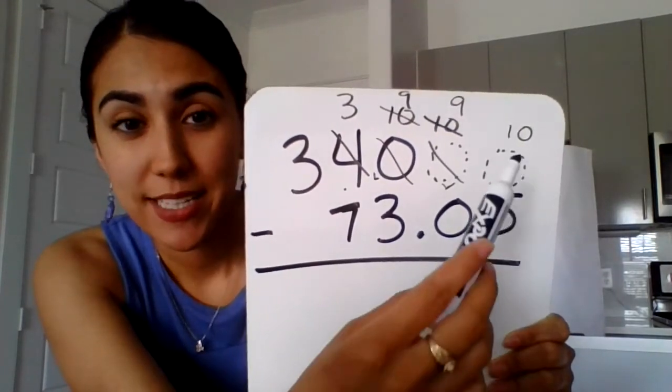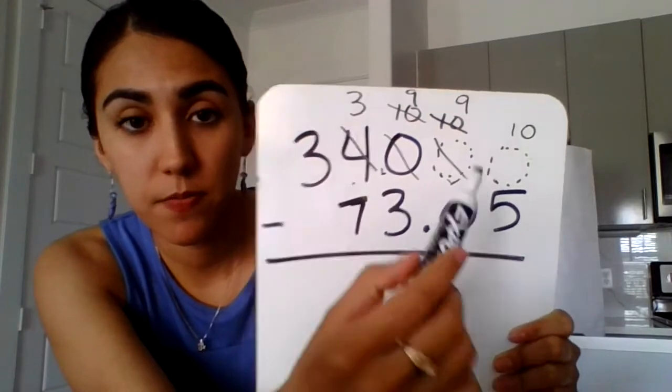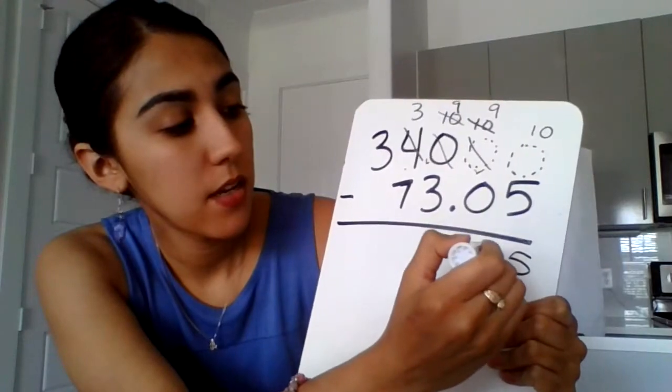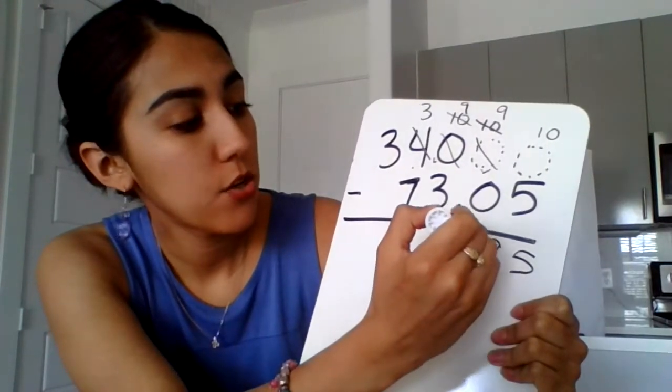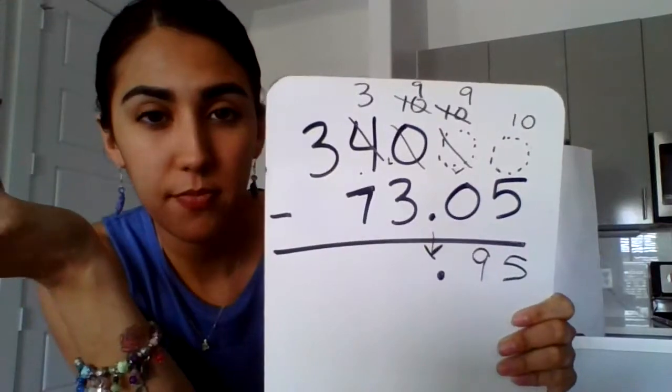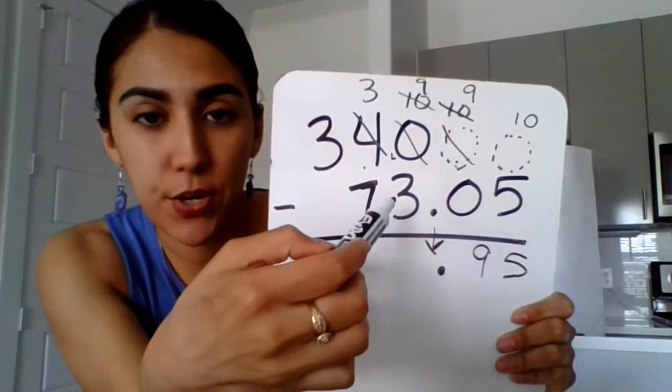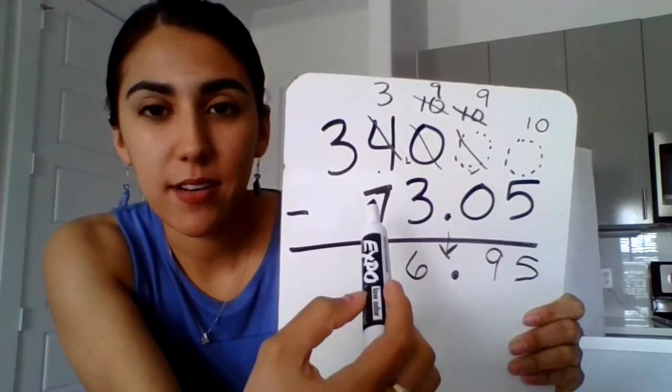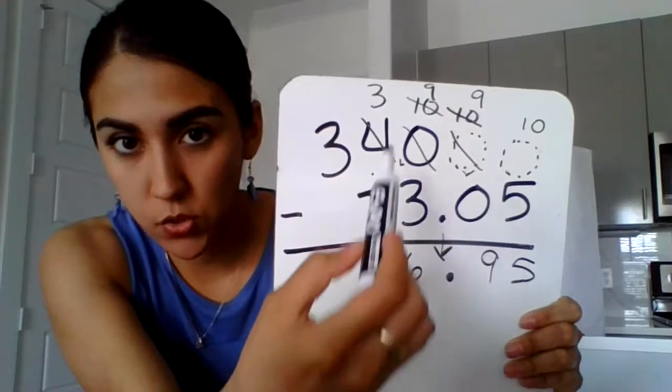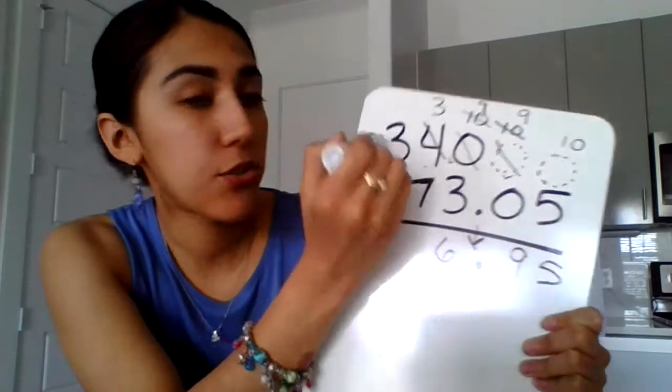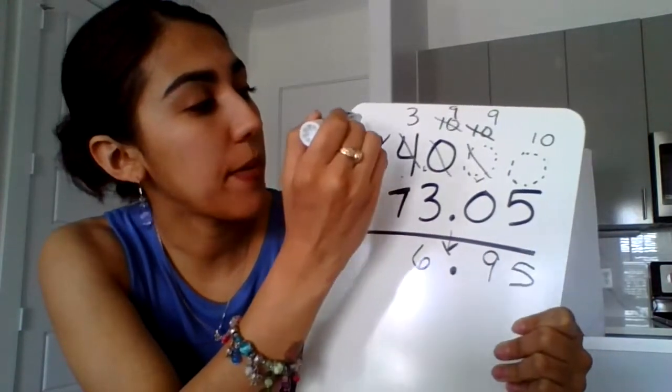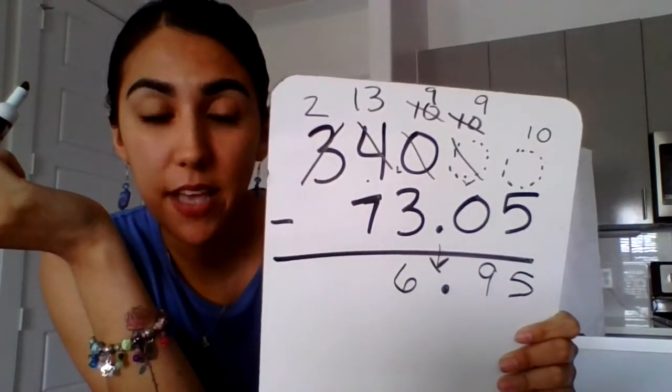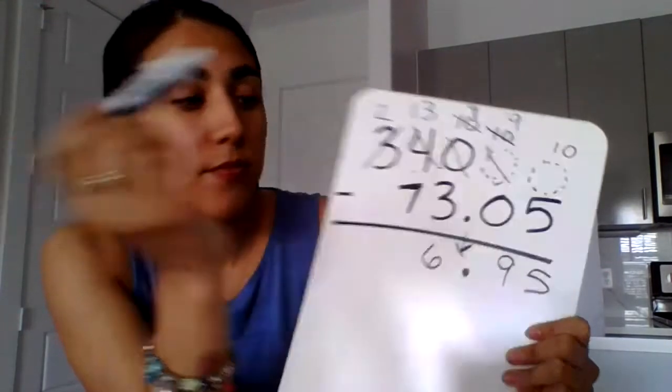Now we can start subtracting. 10 minus 5 equals 5. 9 minus 0 is 9. Drop your decimal straight down. 9 minus 3 equals 6. Now, 3 minus 7. Can I do that? No. So I need to go to my next door neighbor and borrow. This 3 is going to give 1, so that makes it a 2. And that makes that 3 a 13. 13 minus 7 is 6. And 2 minus nothing is 2.